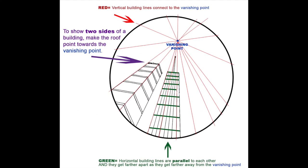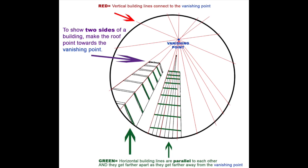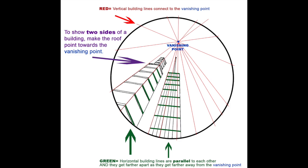As I fill in the horizontal lines on this building, I'm going to follow that rule again where I'm going to make each one of them parallel to each other, and I'm going to make them get a little bit farther apart as they get farther away from the vanishing point.